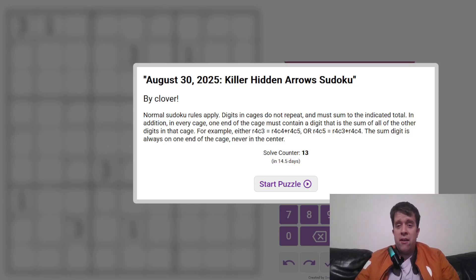G'day and welcome back to another GAS walkthrough. Today we're looking at August 30th, 2025's Killer Hidden Arrows Sudoku by Clover. It's always one of our sides here at GAS HQ, so my name is Bill Murphy. G'day, how are you doing?